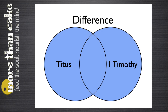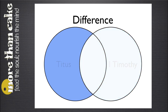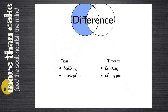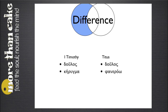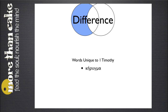Now let's look at Difference. When I merge two lists using Difference, Logos is only going to give me the word that is unique to the primary list. So I started with Titus and I'm merging it with the list from 1 Timothy. In this case, I end up with only one word which was unique in Titus — Phanero. But let's flip that around. If I began with 1 Timothy as my primary list and merged it with Titus, I would end up with the word Kerygma, because that word was unique to the primary list I started with.